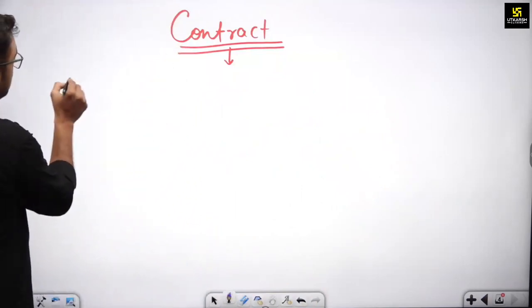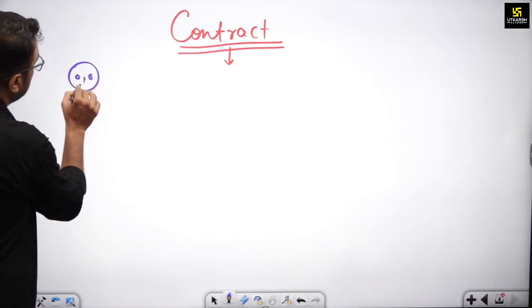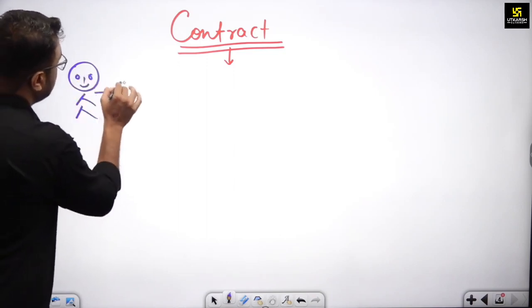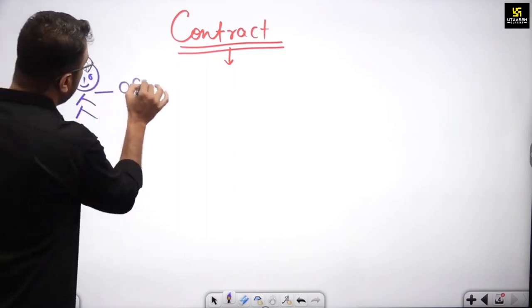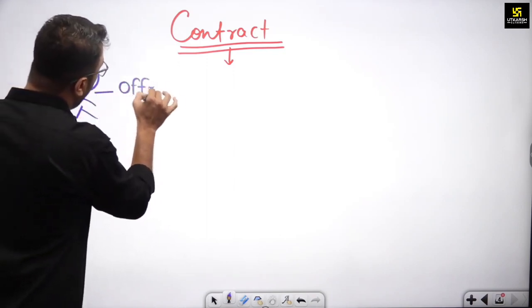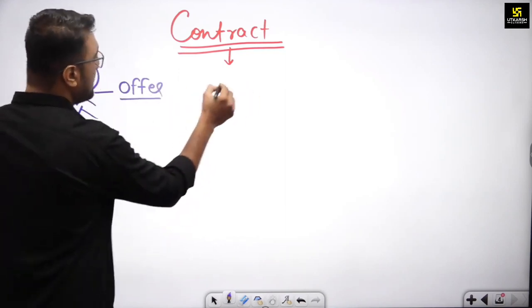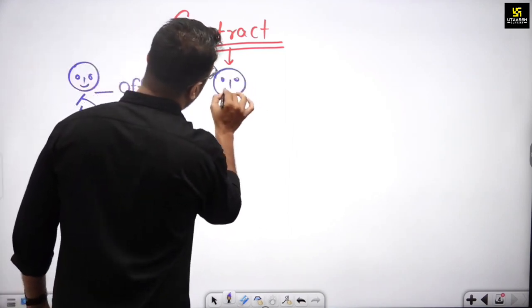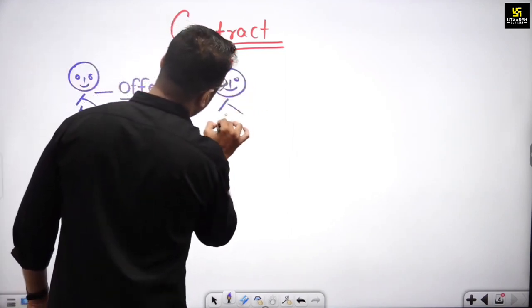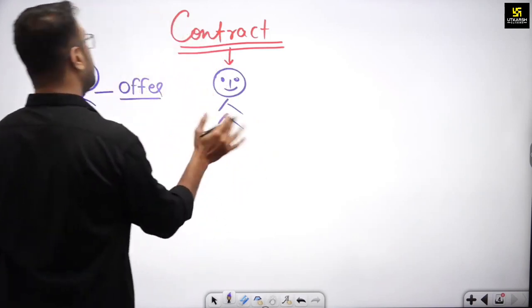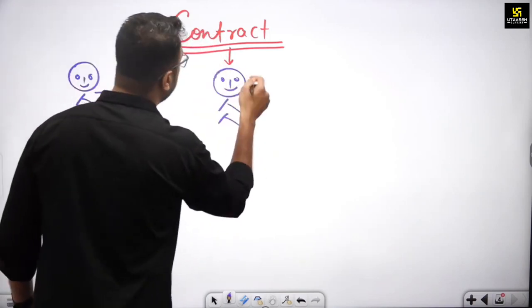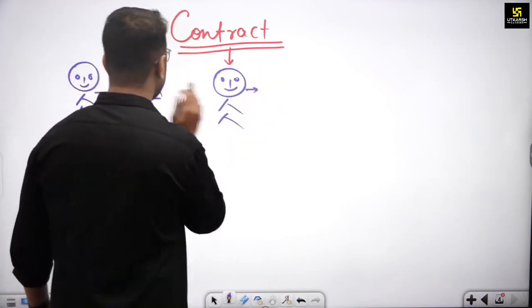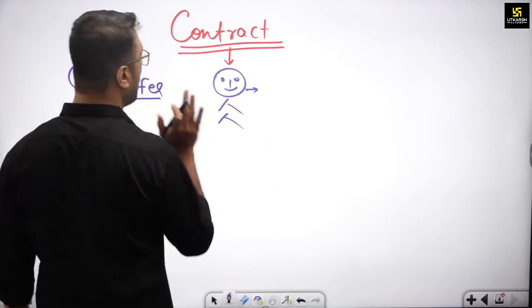First of all, one person offers an offer. So this means, to form a contract, at least there must be two persons. So this is the offer.